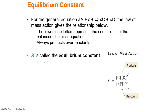Let's look at the equilibrium constant, but first let's explore a general equation. We're going to generalize that the reactants are A and B with coefficients that are the lowercase of each of those letters. This is an equilibrium reaction, so it goes both in the forward and the reverse direction, and it has products C and D with similar coefficients.